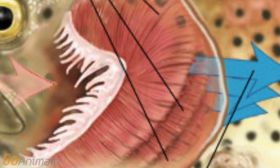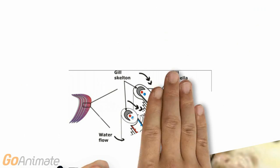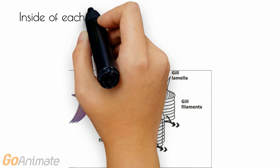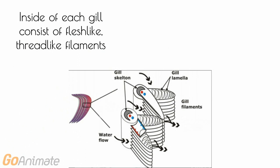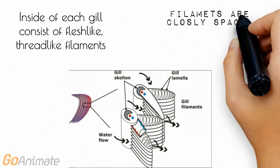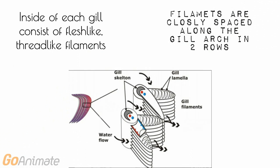Let's take a closer look at the gill structure. Most fish have four gill arches that run between the gill slits on each side of the head. The inside of each gill consists of flesh-like, thread-like filaments. These filaments are closely spaced along the gill arc in two rows, and water from the mouth passes over them.